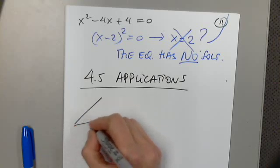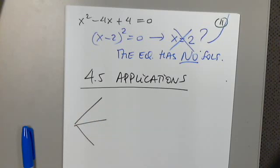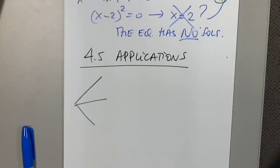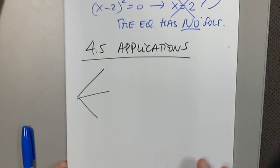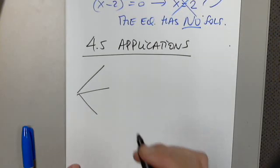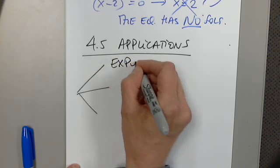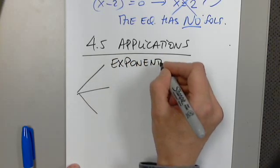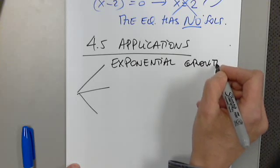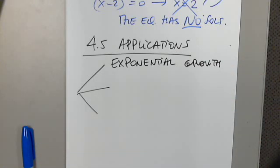4.5 then. Applications. We have three types of applications here. We already looked at a few before with compound interest continuously and n times per year. But here we have in this section, we have three to look at. Number one is exponential growth. What grows exponentially? People, fish, population, mice, rats, rabbits, birds, bacteria. They all grow like this so fast, the fastest possible growth.